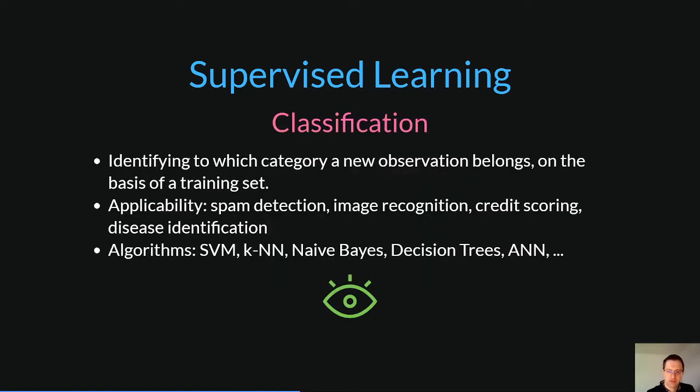Classification uses an algorithm to accurately assign test data into specific categories. It recognizes specific entities within the dataset and attempts to draw some conclusions on how those entities should be labeled or defined. It is commonly used for spam detection, image recognition, credit scoring, and so on.